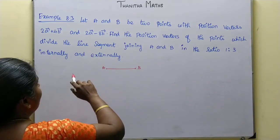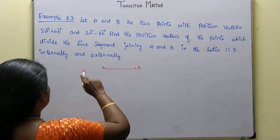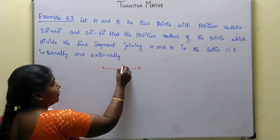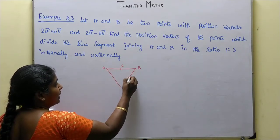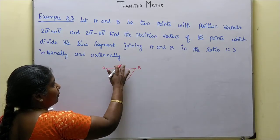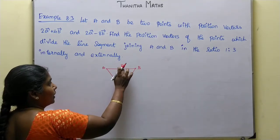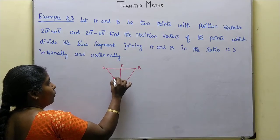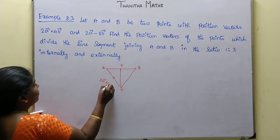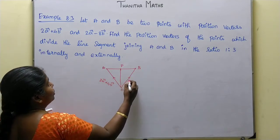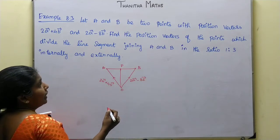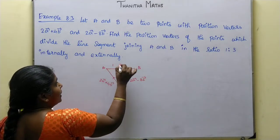Find the position vectors of the points which divide the line segment joining A and B in the ratio 1 is to 3. C is the point that divides the line. OA vector is 2a vector plus 4b vector, and OB vector is 2a vector minus 8b vector. The ratio is 1 is to 3.